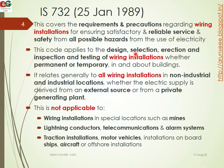IS 732 applies to the design, wiring, selection, erection, inspection, and testing of wiring installations — both permanent and temporary. It relates generally to all wiring installations in non-industrial and industrial locations, whether the electrical supply is derived from an external source or from a private generating plant.